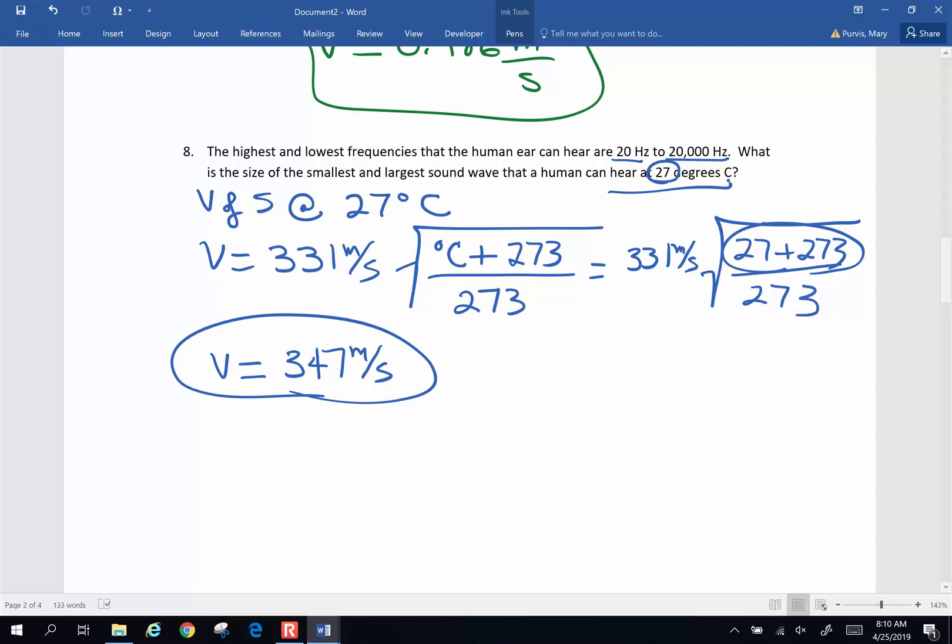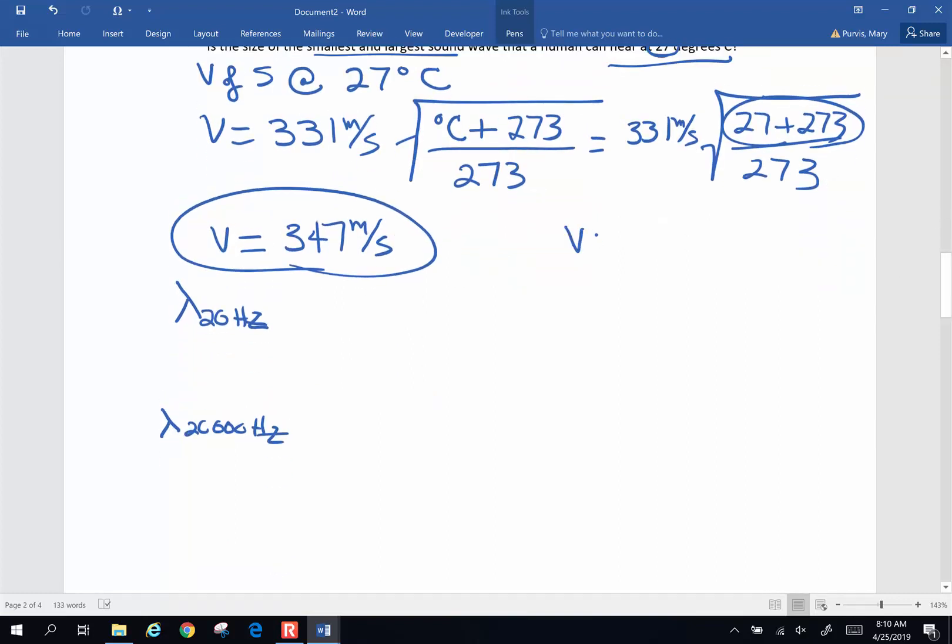Next, we want to know what is the lowest and highest wavelength, the size of those waves that the human ear can hear. So I want the wavelength at 20 hertz, and I want to find the wavelength at 20,000 hertz. Well, for both of those, we are going to have to use the wave velocity equation. Velocity is frequency times wavelength. Wavelength is going to be little algebra. Divide both sides by frequency. So that's going to be wavelength is velocity over frequency. Velocity, 347 meters per second divided by 20 hertz. And for the lower one, 347 meters per second divided by 20,000 hertz.